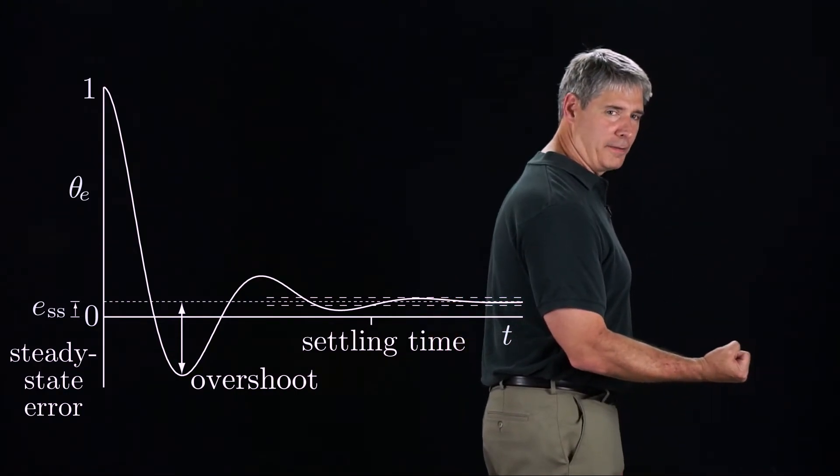Visualizing the error response with my elbow, we would get a motion something like this. My arm comes to rest with a small steady-state error. A better response would have no steady-state error, no overshoot, and a faster settling time.